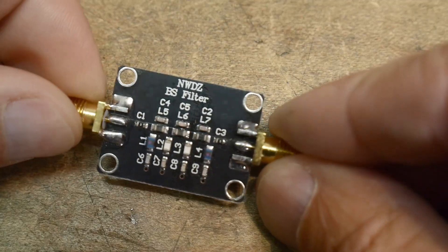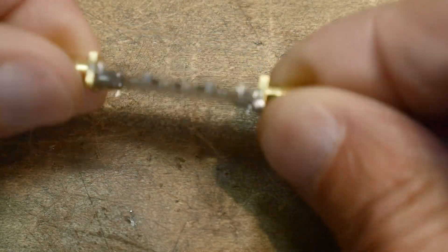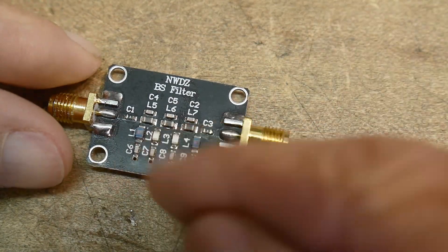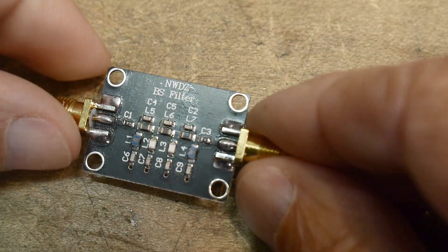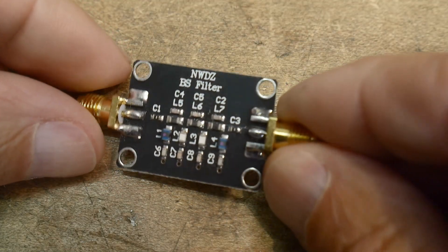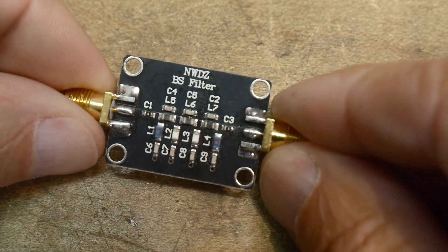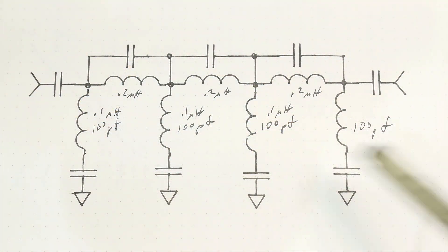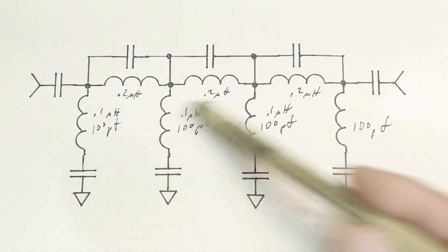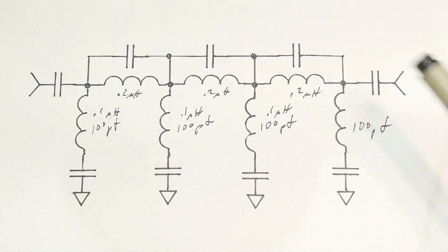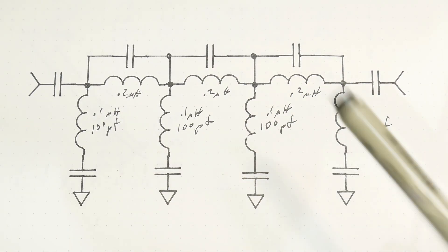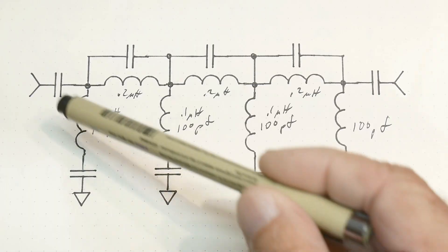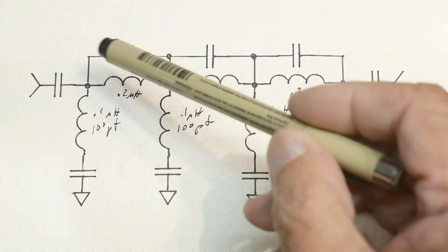It has a whole bunch of L's and C's - you can see them marked on there. Let's take a look at the schematic. Here we go - input, output, and a bunch of L's and C's. These L's and C's are in series, these L's and C's are in parallel.